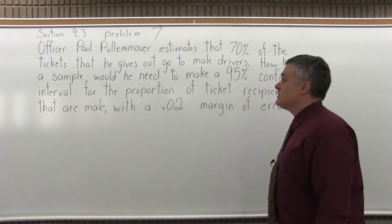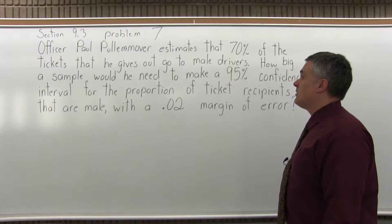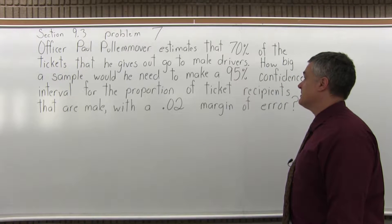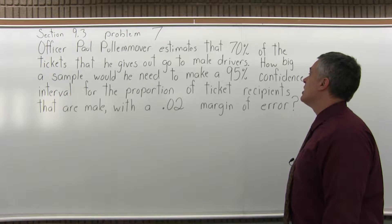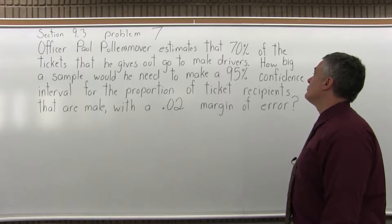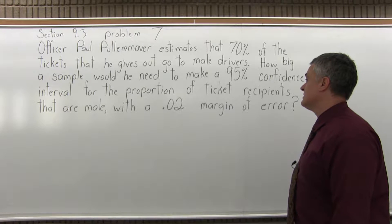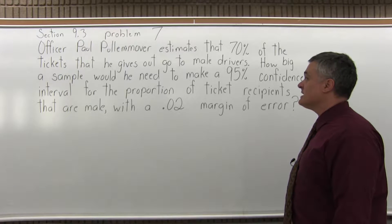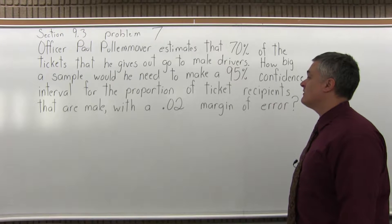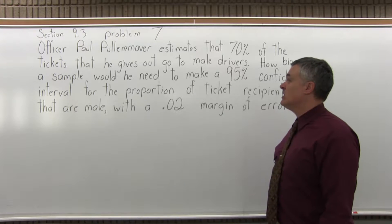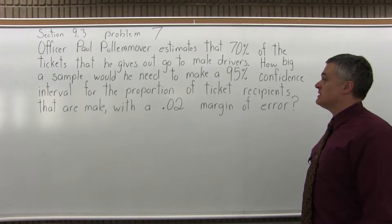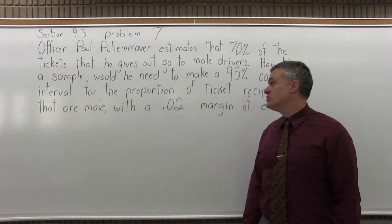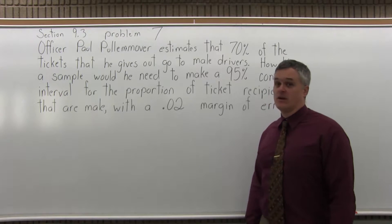It says: Officer Paul Pullemover estimates that 70% of the tickets that he gives out goes to male drivers. How big a sample would he need to make a 95% confidence interval for the proportion of ticket recipients that are male, with a .02 margin of error?